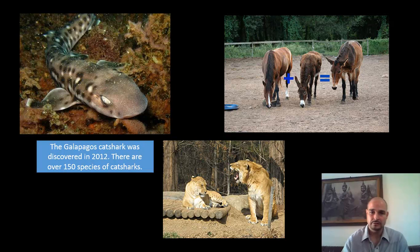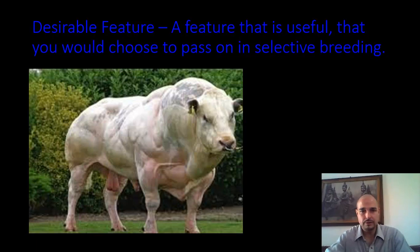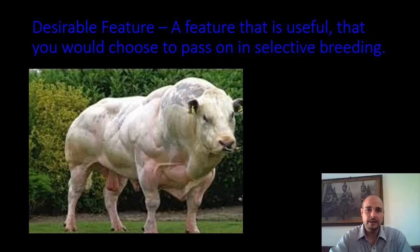We're going to be talking about features within a species that we would choose to pass on to the offspring. That is called a desirable feature. The picture here is super cow, and the feature that is useful is large muscle mass. While we're carnivores and eat meat, we are choosing and breeding for large muscle mass and passing that on through selective breeding.